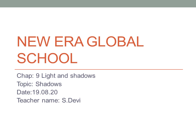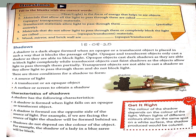What do I mean by the shadows? What is a shadow? The shadow is a dark shape formed when an opaque material or translucent material blocks the light. Opaque material will block the light completely, and translucent material allows the light to pass through them partially.